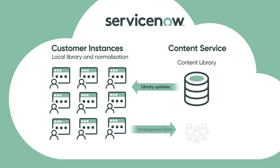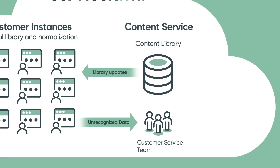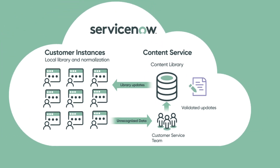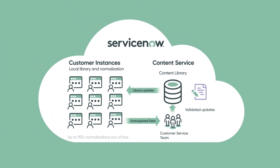Customers can also opt in to the content service, anonymously providing information on discovered software which was not automatically normalized. This allows SAM Pro to crowdsource new content, research it, and publish it in the software library for everyone's benefit, thereby improving our normalization rates.